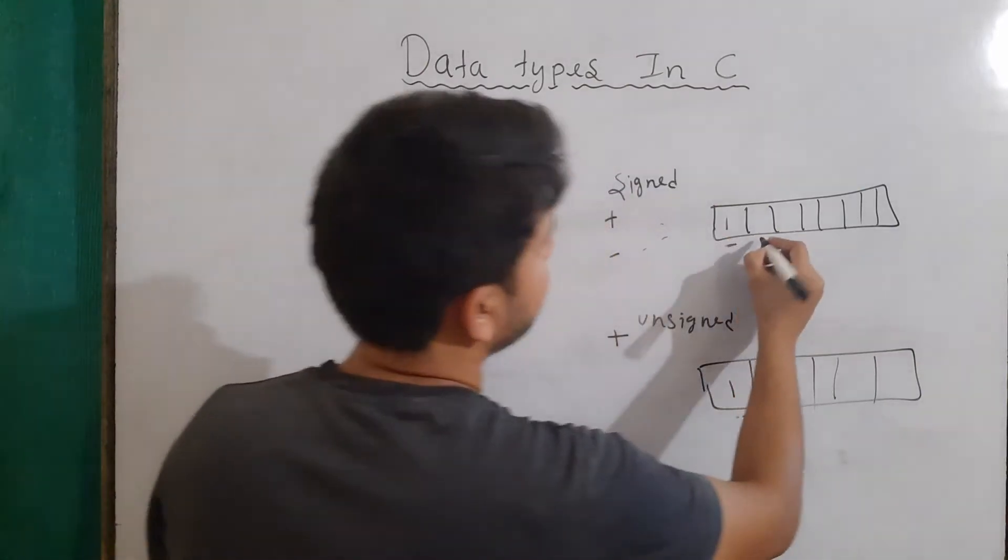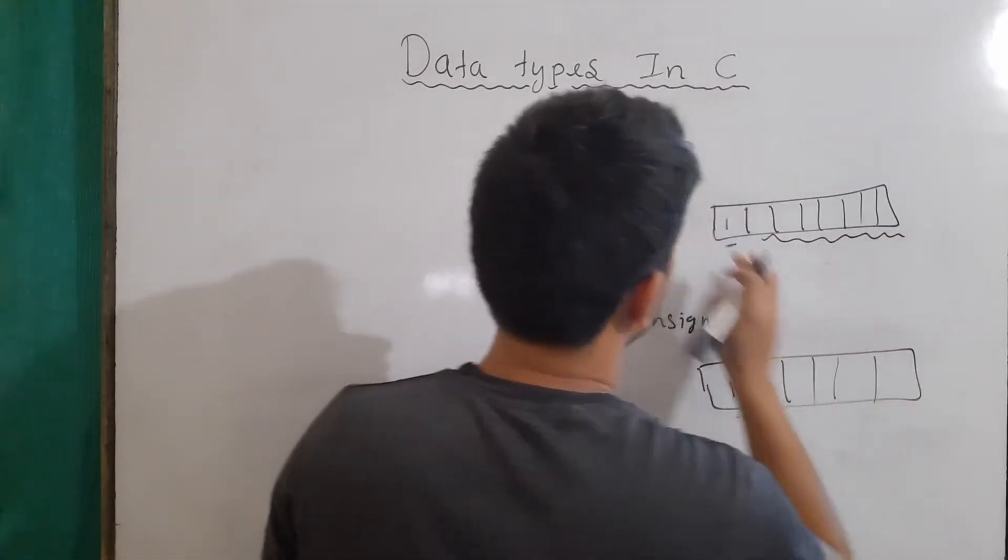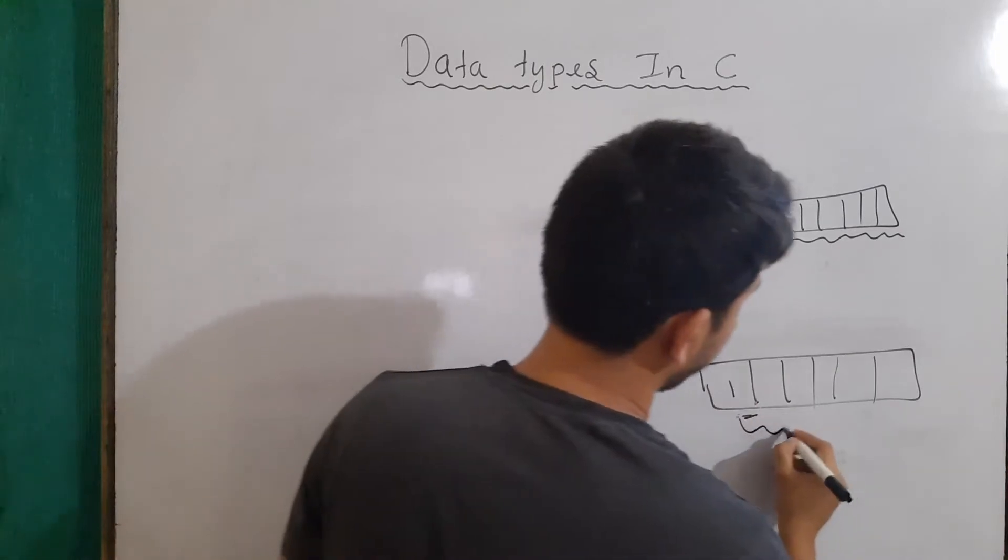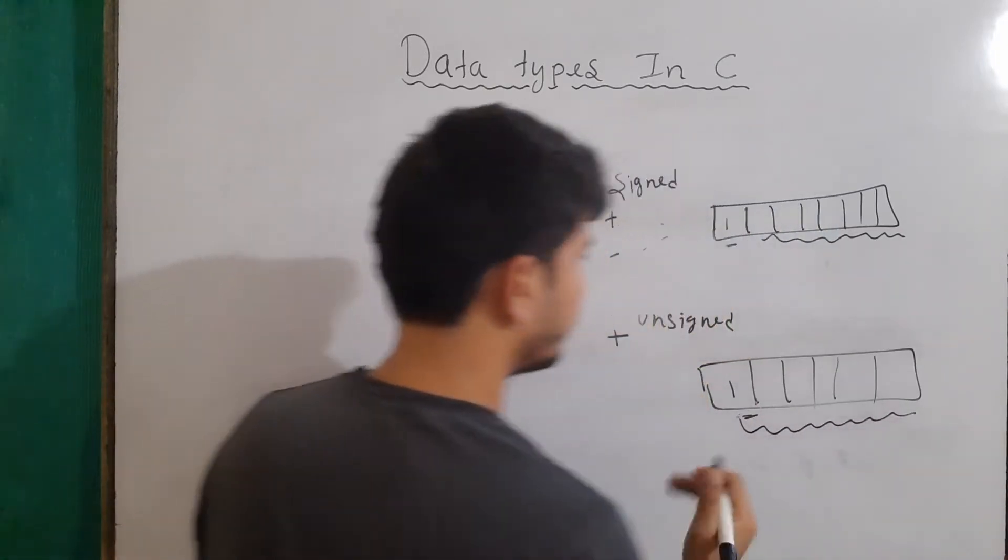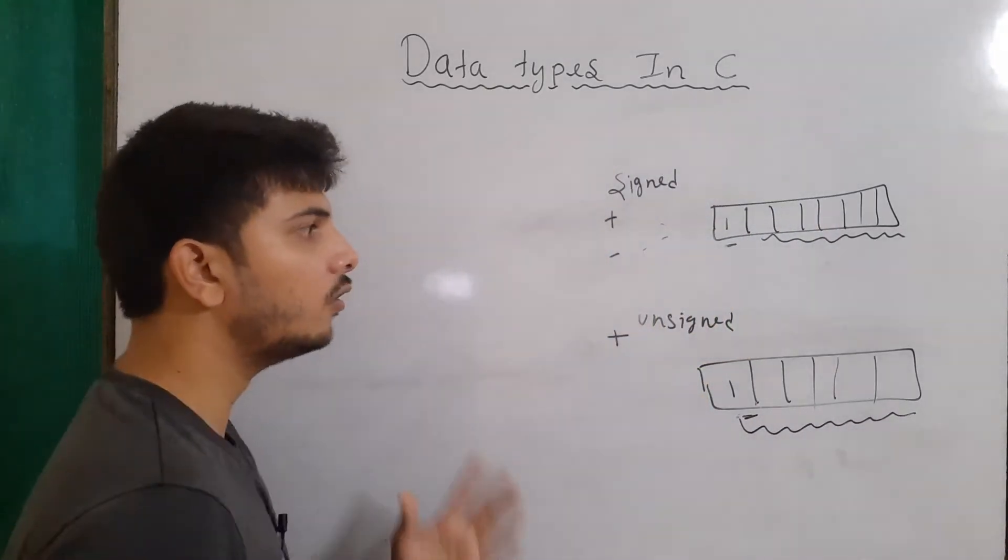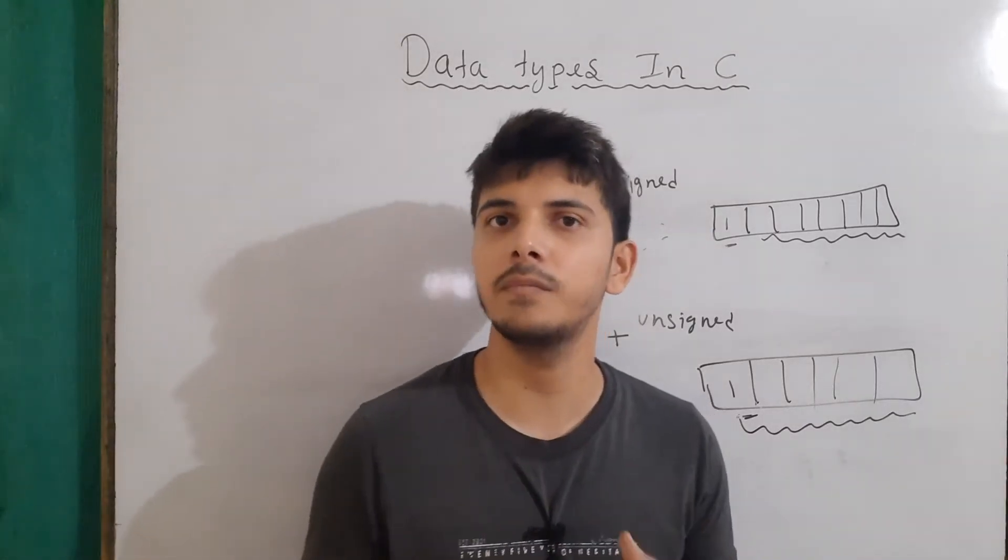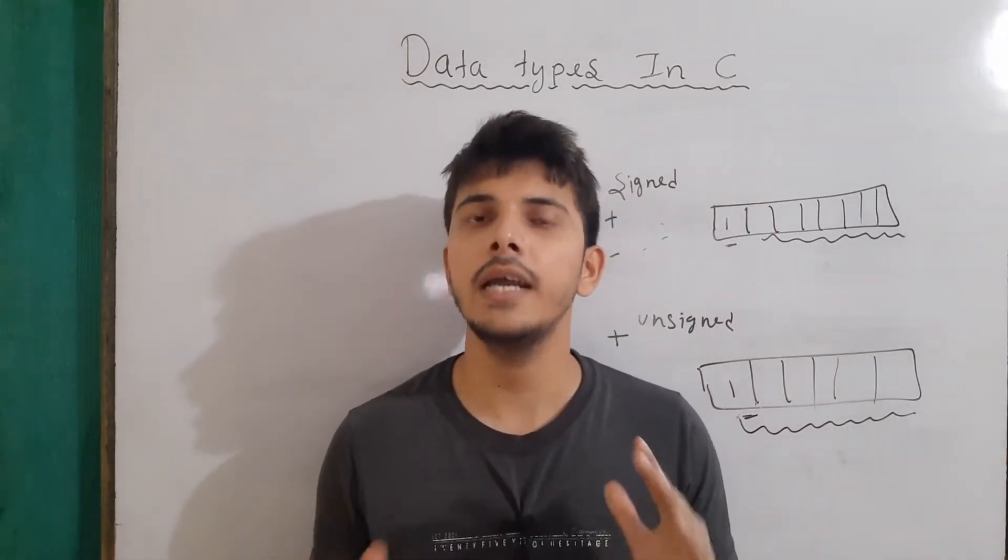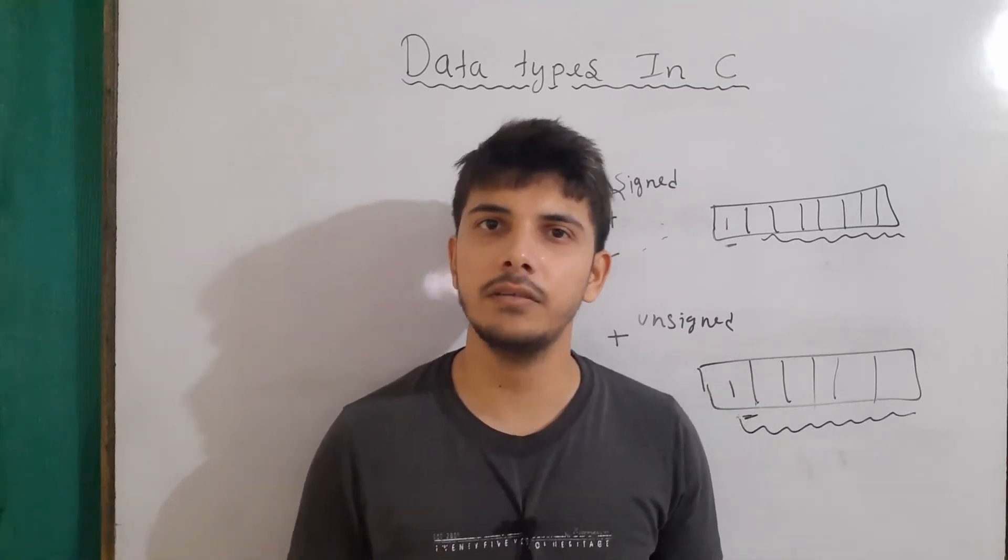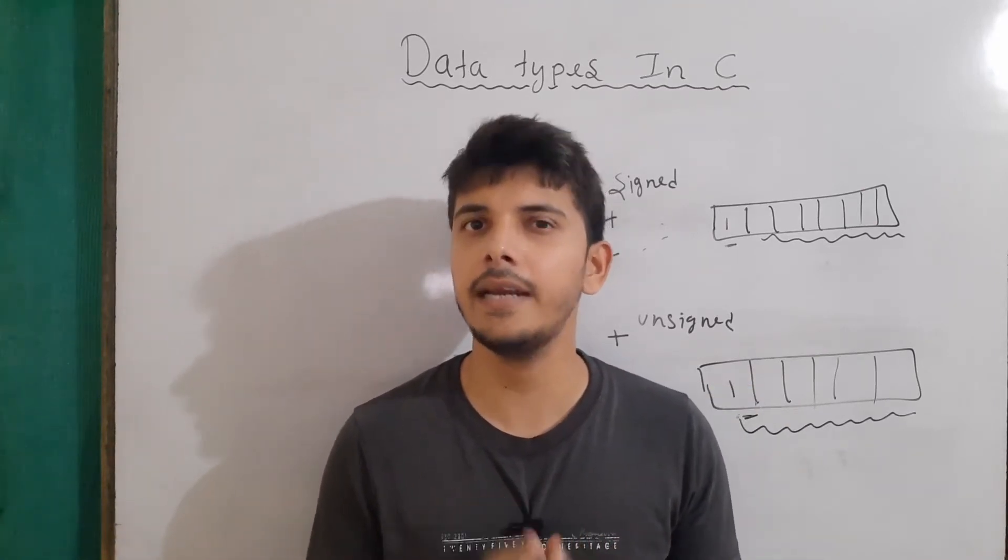Because here 7 bits were used to represent numbers, but here now 8 bits will be used to represent numbers. If you don't know about how to represent numbers in binary form and how negative numbers are shown in binary or binary to decimal conversion, then you can check out this video in which I had talked about this in detail.